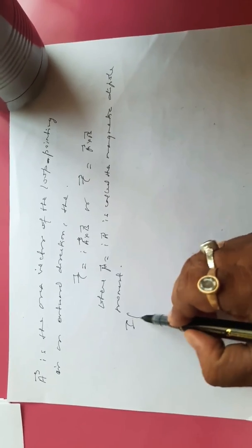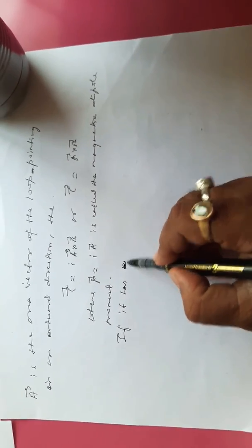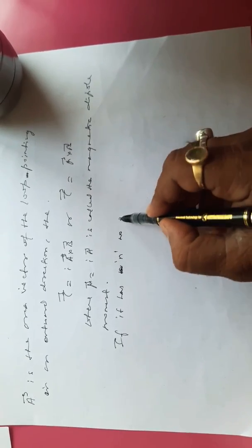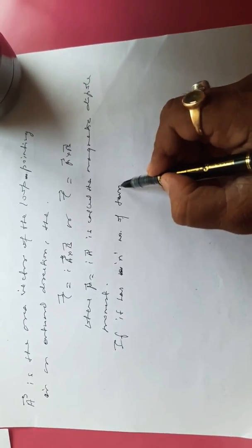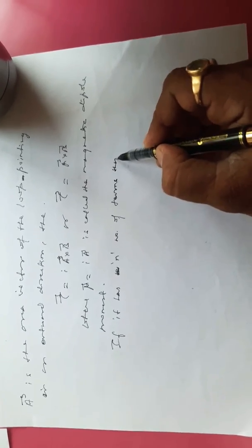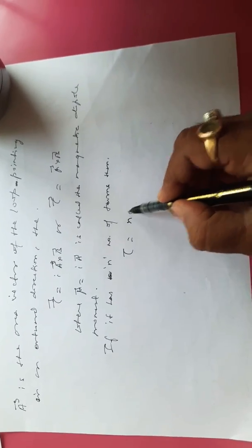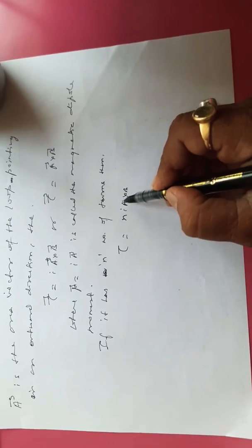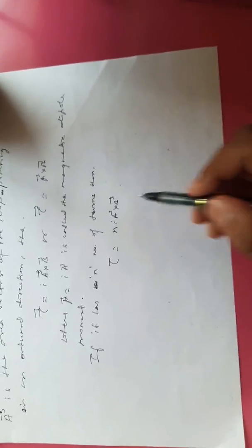This completes the derivation for torque on a current loop. If the loop has N number of turns, then τ = N × I × A × B, or in vector form τ = NIA × B. So this is how it works.